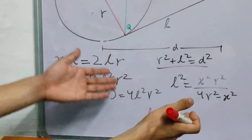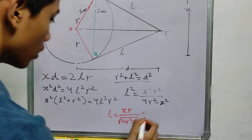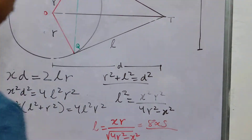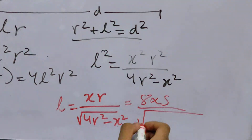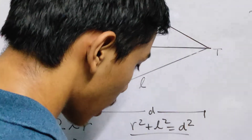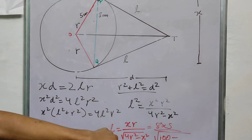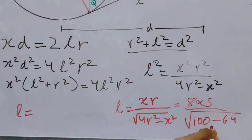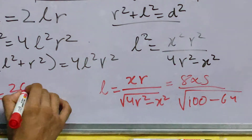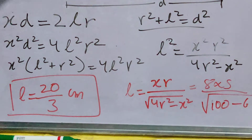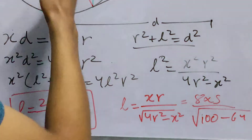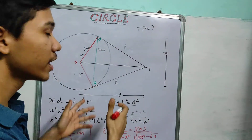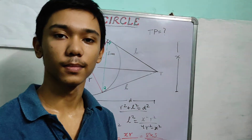Substituting the values: X is 8 (the entire chord PQ is 8 cm) and R is 5. So L equals 8 times 5 divided by the square root of (4 times 25 minus 64), which is 40 divided by the square root of 36, giving 40 divided by 6, which simplifies to 20 over 3 centimeters. This is how you use the Ptolemy theorem to solve a problem. In the next video we will prove the Ptolemy theorem. Thanks for watching.